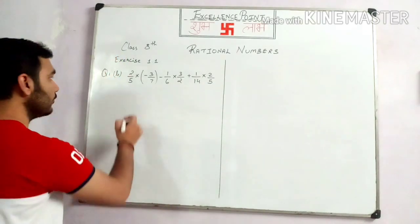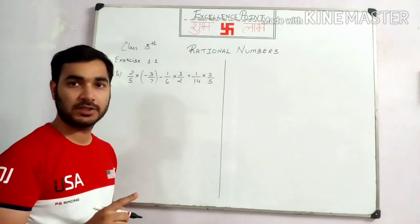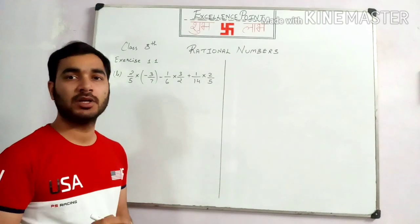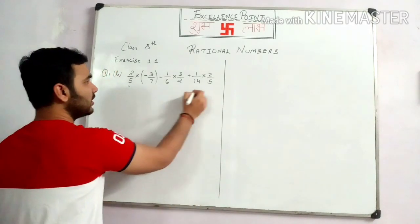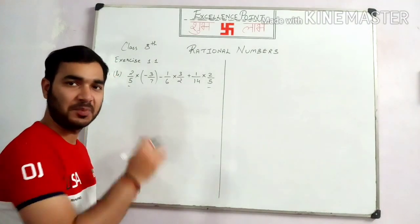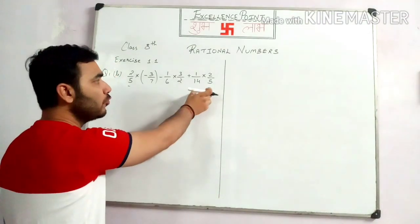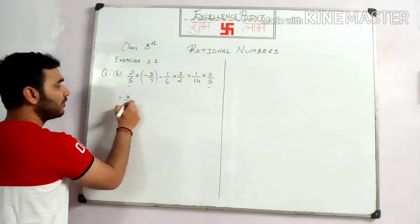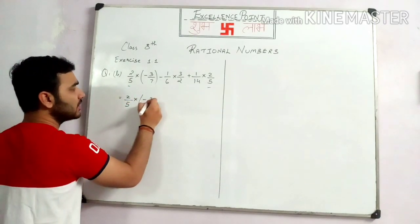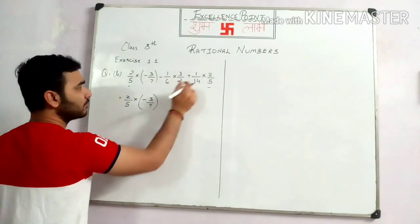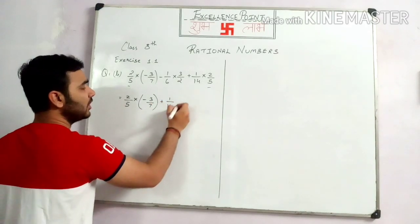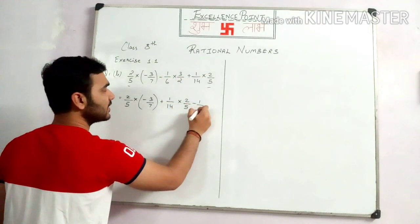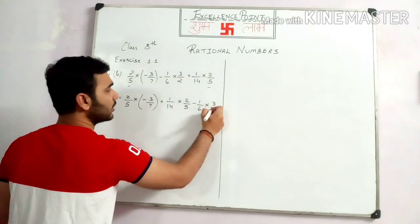In the previous question we have already studied that the first step is to find which rational number is common. You can see that 2 by 5 is common between them. So we have to move this part with the pair also: 2 by 5 multiplied by minus 3 by 7, plus 1 by 14 multiplied by 2 by 5, minus 1 by 6 multiplied by 3 by 2.